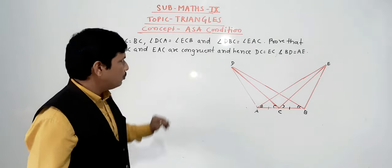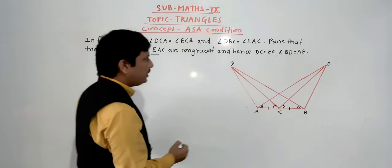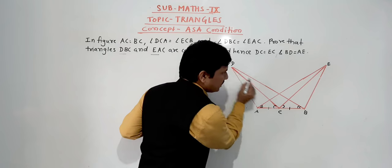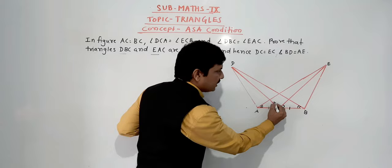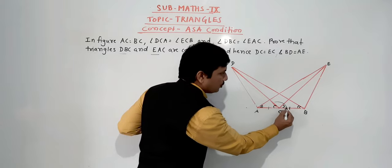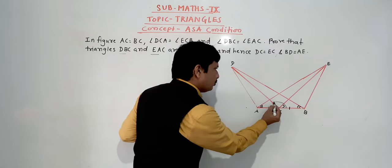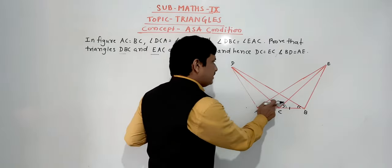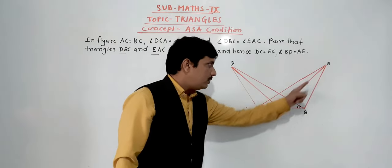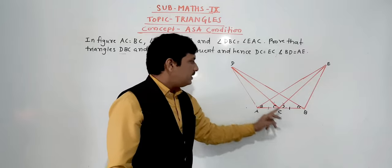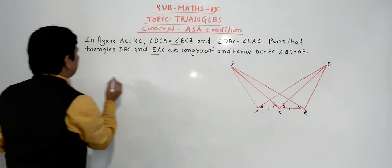We need to first think whether the information is directly available or we need to do something different. So which two triangles are we considering? DBC and EAC. In triangle DBC, we think about angle C — this whole angle is going to be used. In triangle EAC, similarly this whole angle is going to be used. Now, angle ECB and angle DCA are equal — these two angles are equal.